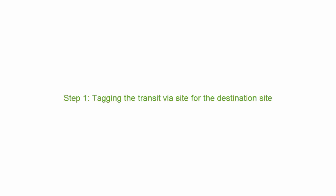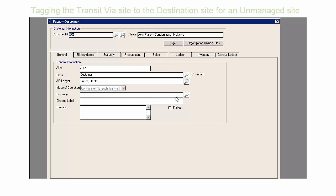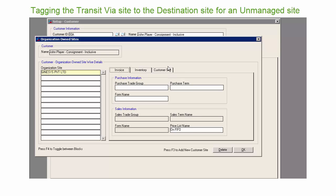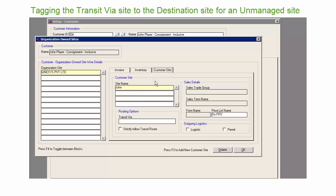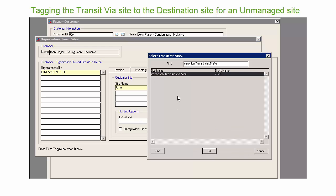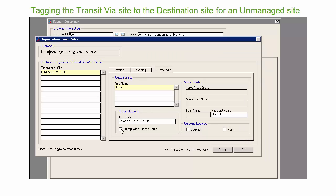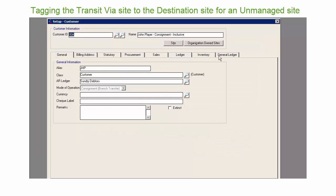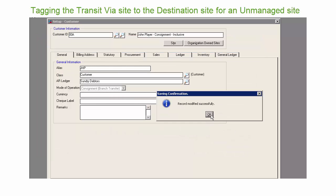Step 1: Tagging the transit via site for the destination site. In the customer form, click the organization owned sites button. You will see the list of sites the customer owns under the customer tab. Select the customer's site and mention the transit via site. To use the transit via option, check the strictly follow transit route checkbox for the site. Now the site is ready to receive the goods from the transit via site.